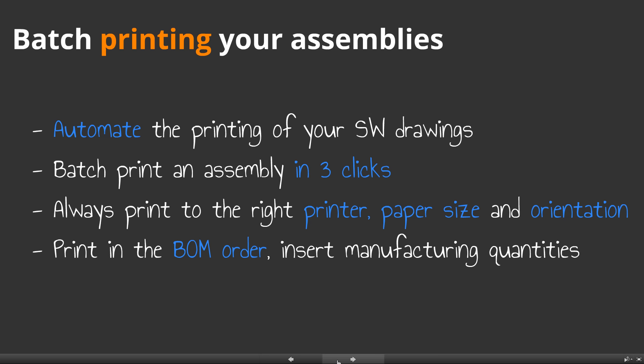Custom tools can fully automate the printing of your SOLIDWORKS drawings. With three clicks, you will be able to print all the drawings related to an assembly. Not only will you print all the assembly drawings, but they will also be printed to the right printer, paper size and orientation. Also, with custom tools, you will be able to manage the print order. For example, to follow your bill of material order or insert the manufacturing quantity into the printed drawing.